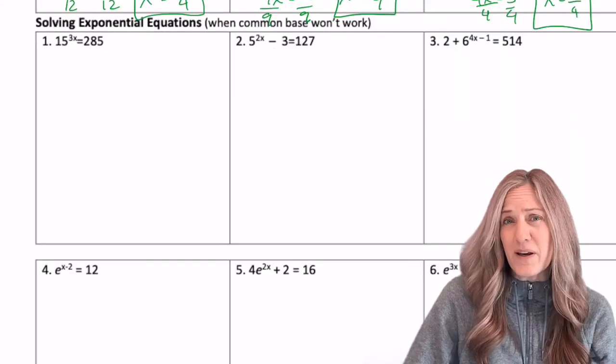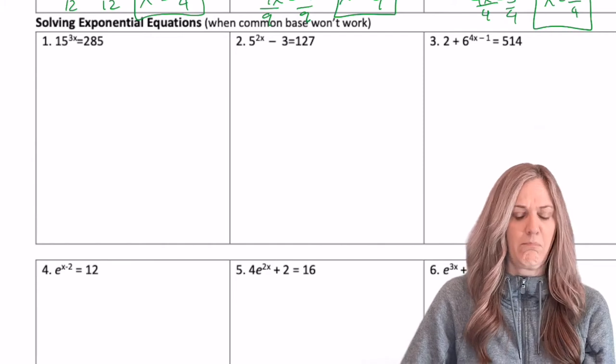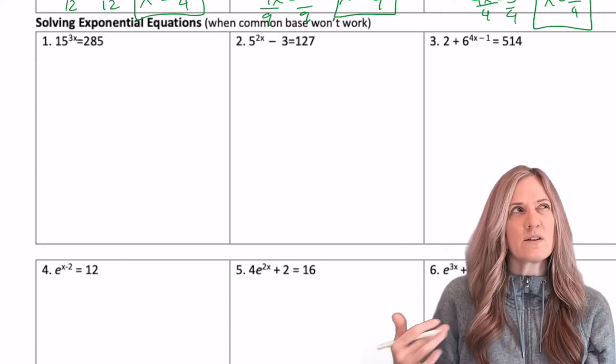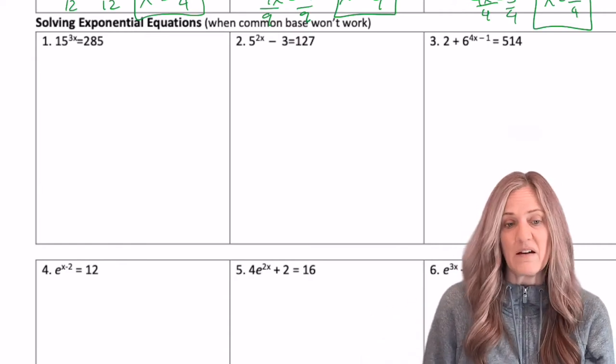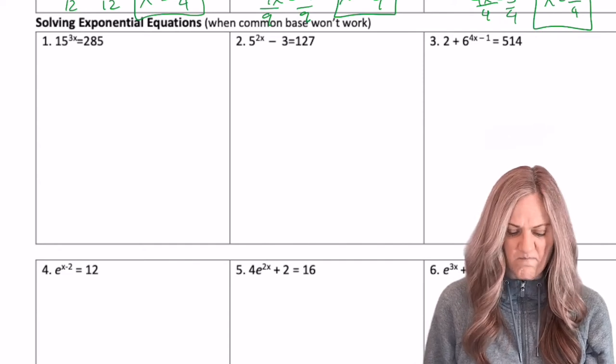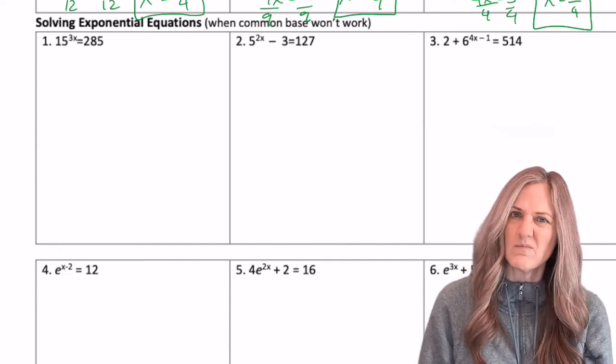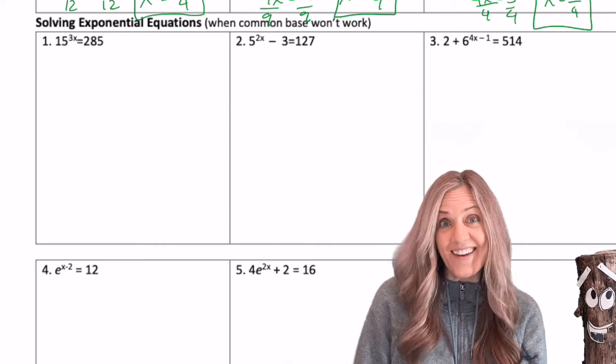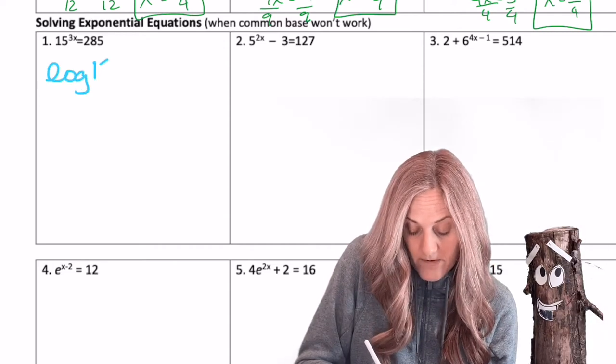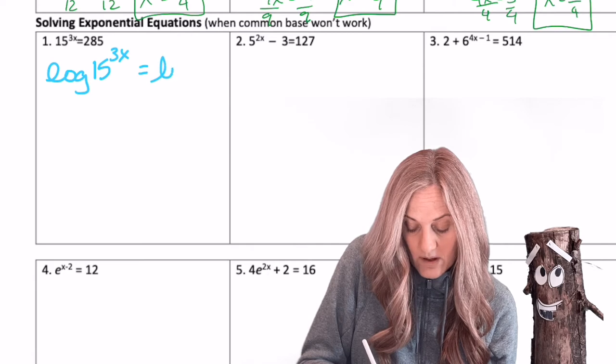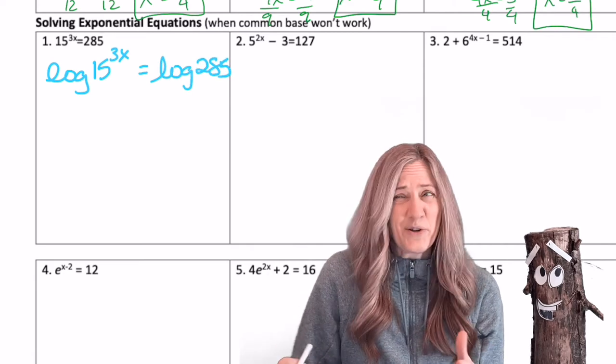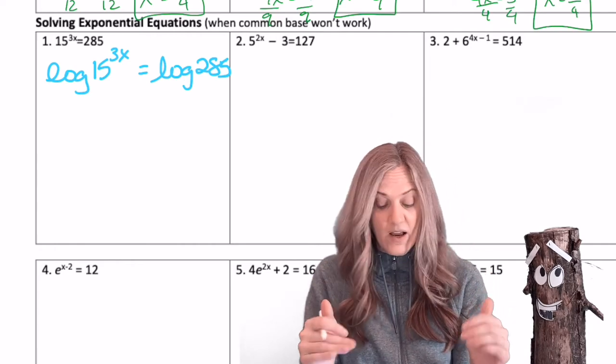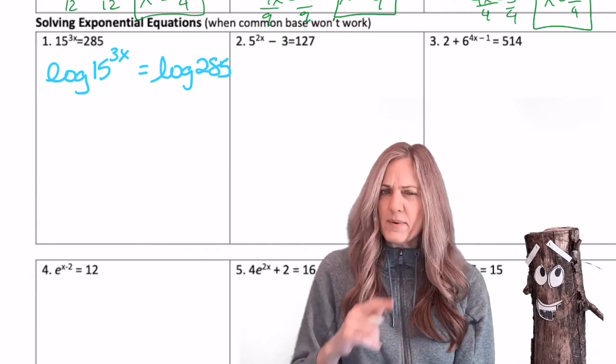This next section says solving equations when common base won't work. 15 raised to the 3x equals 285. Well, let's see. 15 squared is 225. So yeah, common base isn't going to work on that one. I wonder what I could do to get the variable out of the exponent position. What's that, Lottie? Oh, I should log it. So log of 15 raised to the 3x equals log of 285. Remember what you learned way back in Algebra 1. Whatever you do to one side of an equation, you have to do to the other. So I logged both sides. Then you might be saying, how does this help me? Do you see it yet?